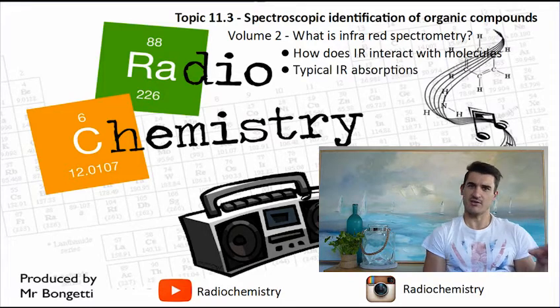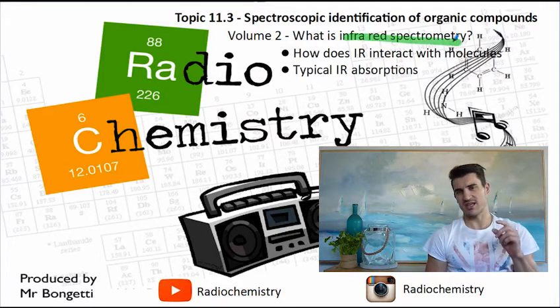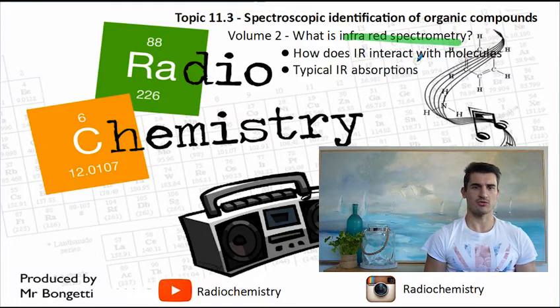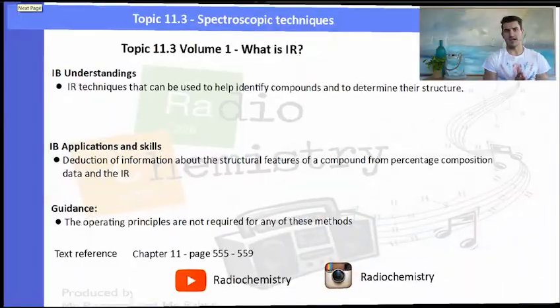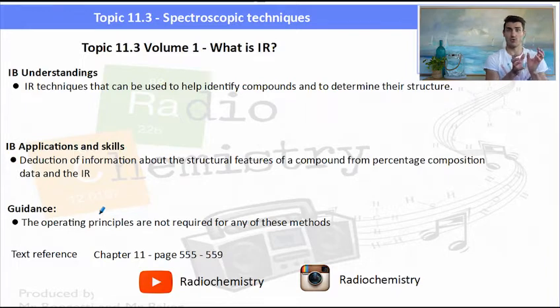We look at how does IR interact with molecules, and then we look at some typical IR absorptions. The IB understandings are basically using IR to determine functional groups of a structure, and we need to be able to look at an absorption spectrum and work out what functional groups are present. Text reference 555 to 559.